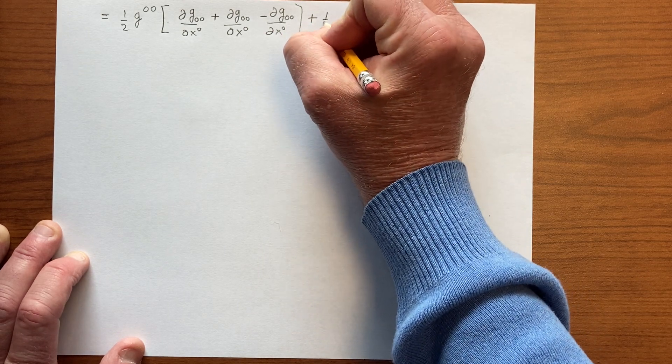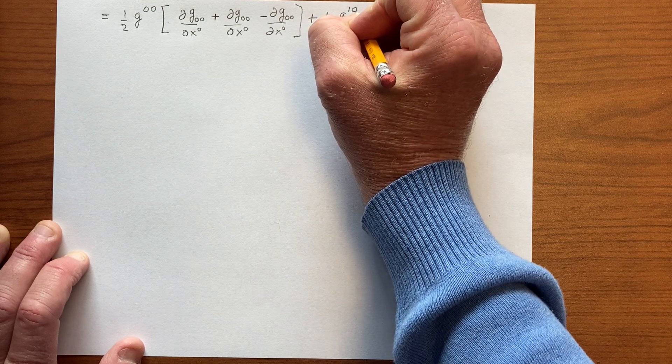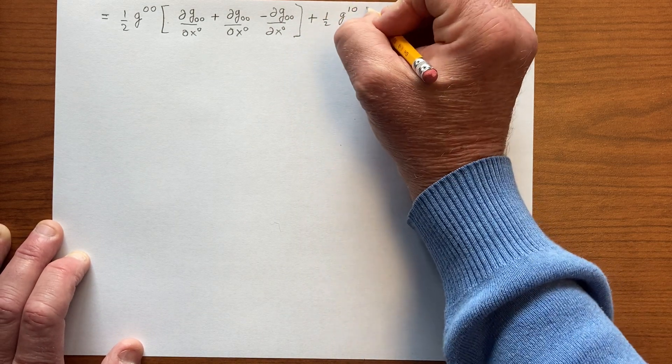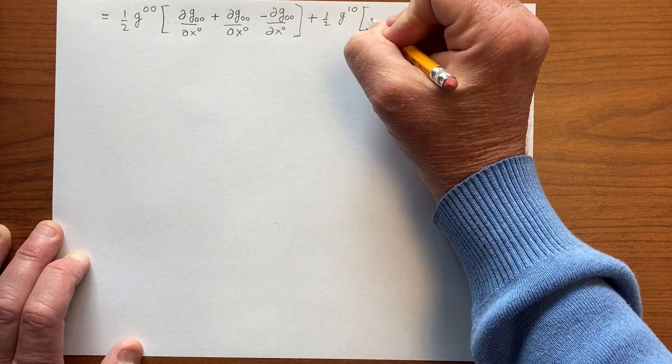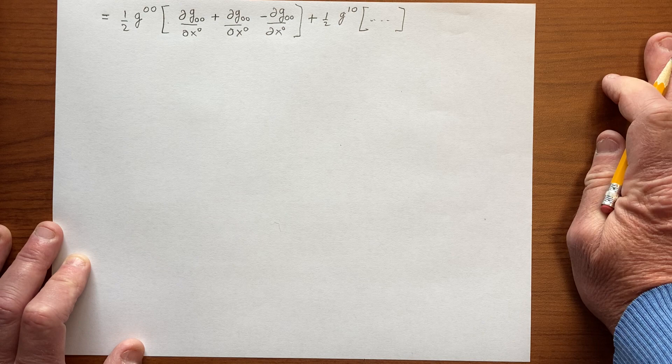But if we were to continue this, we would then have plus ½g^10, right? Because we're summing on b, but none of this actually matters because there are no off-diagonal terms.